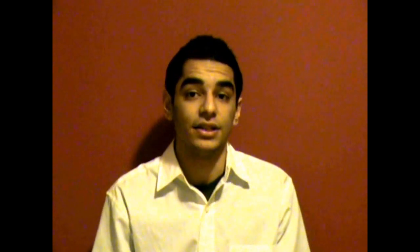Let's get back to the last video's example and assume that if all of the company's warrants and convertible shares were exercised, there would be 68 million shares instead of the old 49 million shares. The increase in shares is literally diluting the earnings — hence the term.